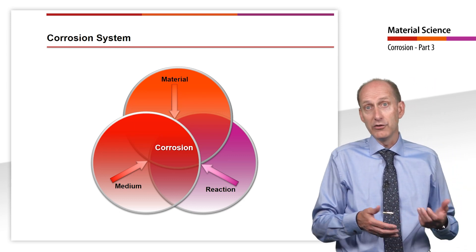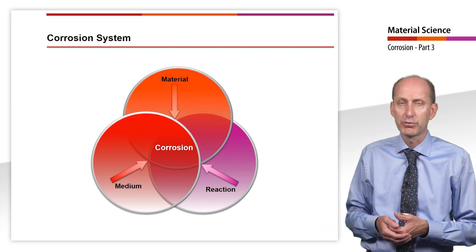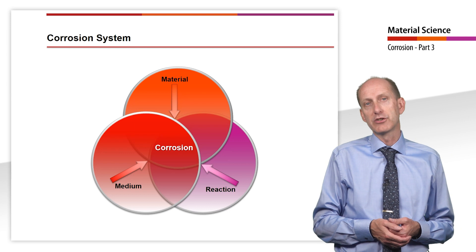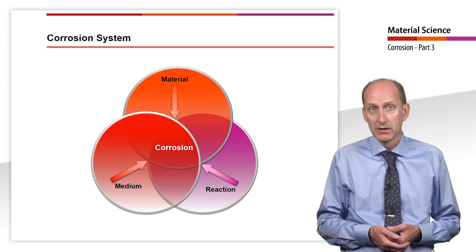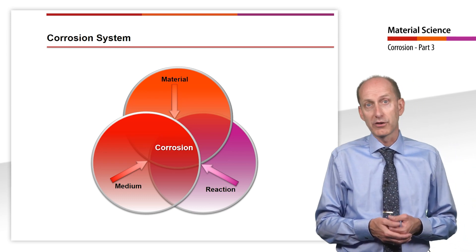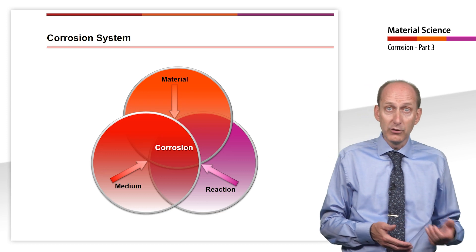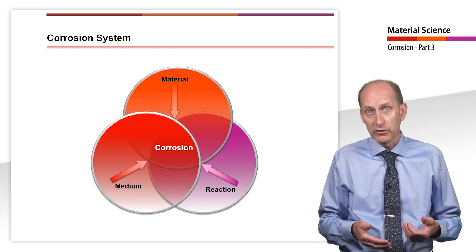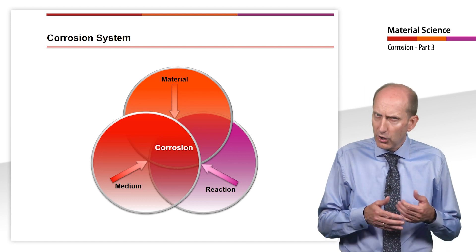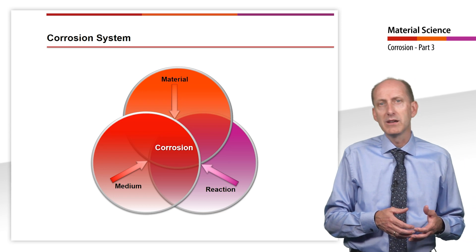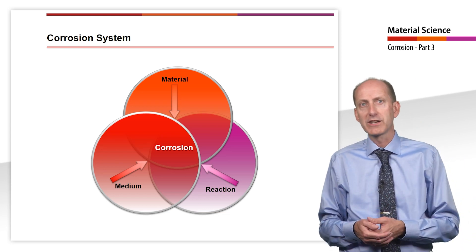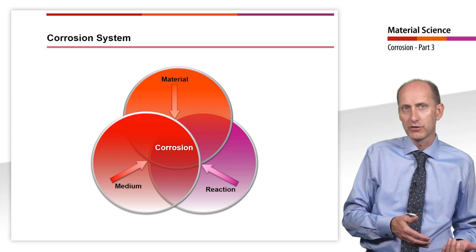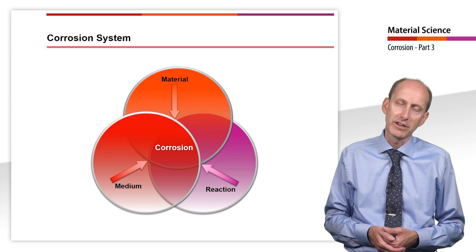We have seen that there are noble and base materials, and that various base materials can also protect themselves by forming a passive layer. But also processing of the material can cause a material change, which eventually leads to corrosion damage. Then we saw how important the environmental conditions are for the corrosion resistance of a material. This includes operating temperature or also the pH value or chloride ion concentration of a liquid medium with which the material comes into contact. Only when we know the sum of this information can we make a definitive statement about whether or not a reaction will occur and thus corrosion. Only then can we think about how to avoid corrosion by selecting a suitable material or by taking constructive measures.